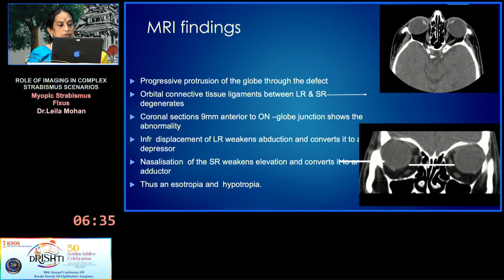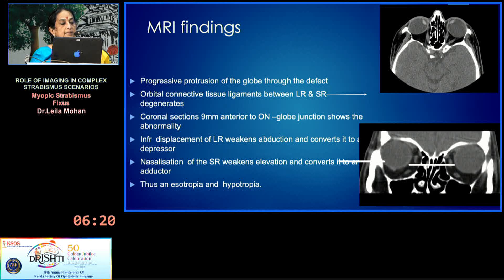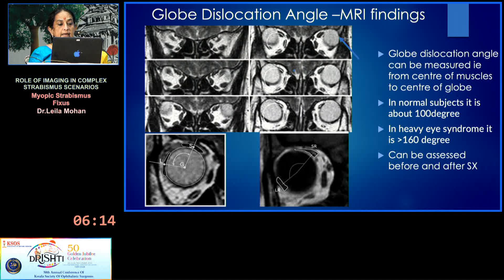Coronal sections about nine millimeters in front of the optic nerve–globe junction show the actual pathology: inferior displacement of the lateral rectus, which weakens abduction and converts it into a depressor, and nasalization of the superior rectus, which weakens elevation and converts it into an adductor — thus producing the esotropia and hypertropia.